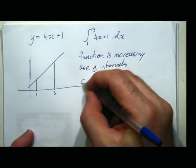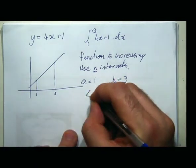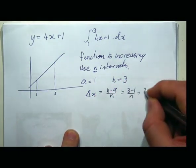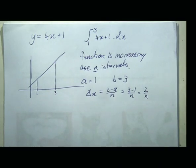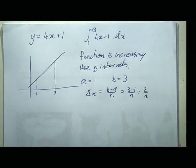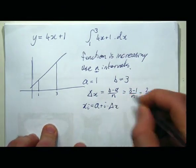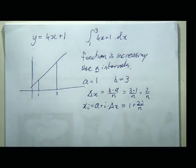So we're breaking it into n intervals. a = 1, b = 3. Delta x equals (b - a)/n = (3 - 1)/n = 2/n. I can't write it any simpler than that — I deliberately don't know n. My xi equals a plus i times delta x, which is 1 + 2i/n.